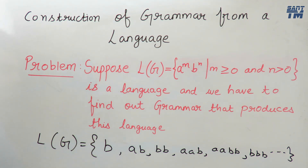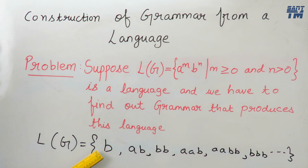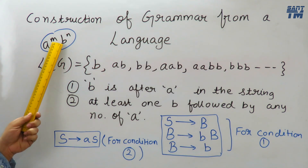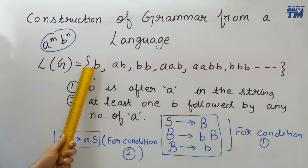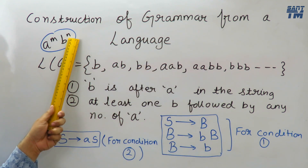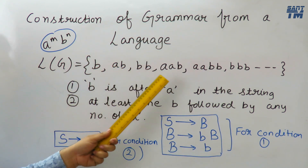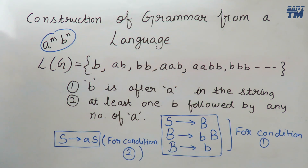The point we have to keep in mind is we have to produce the production rules such that on applying those rules we get strings where b always exists, but a can exist or cannot exist. Using the formula a^m b^n, where b is present everywhere because n greater than 0, and a can be 0 or any number of times, we derive two main conditions necessary to fulfill every string in this set.